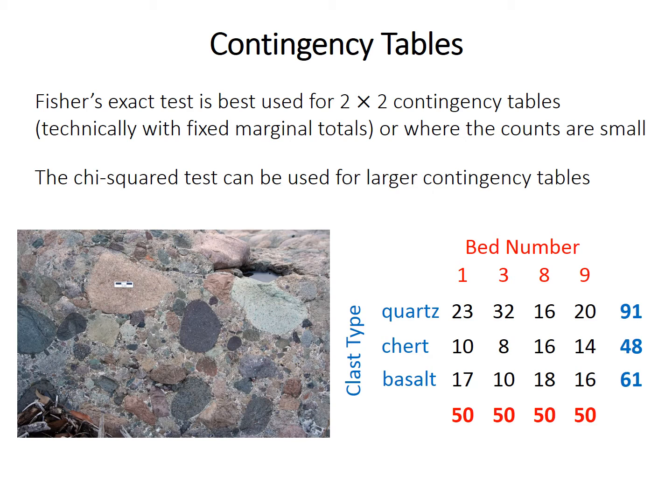The chi-squared test works best for larger contingency tables where nearly all or all of the counts are at least 5, like the example here of rock types in 4 conglomerate beds.